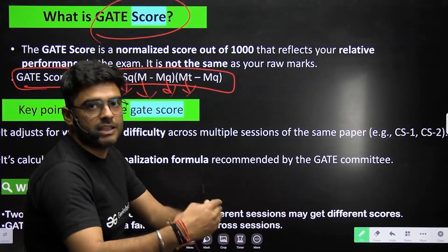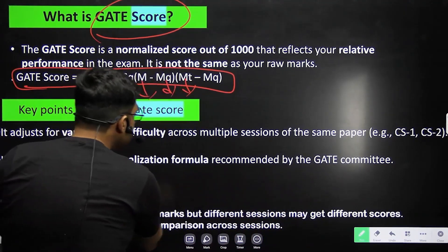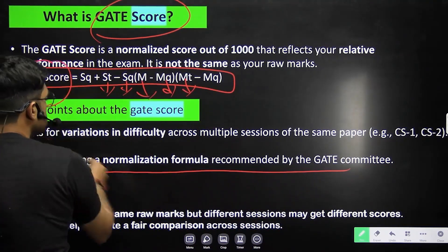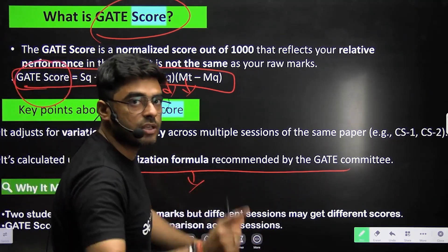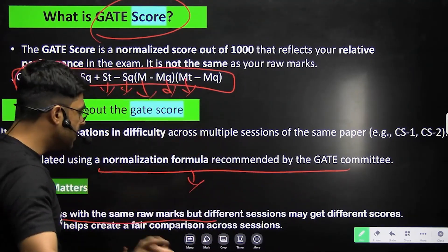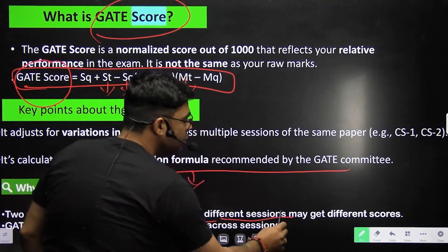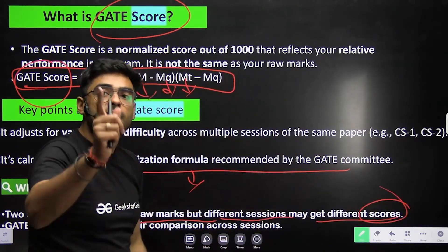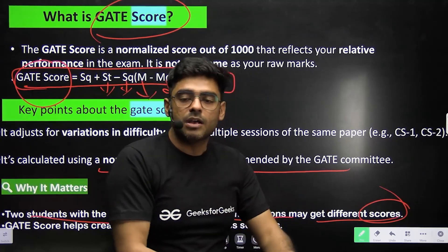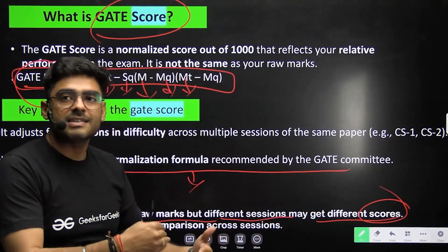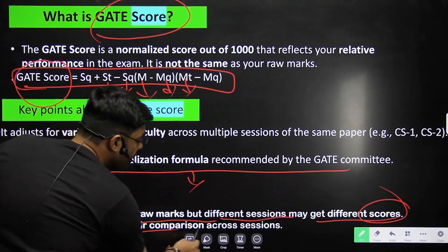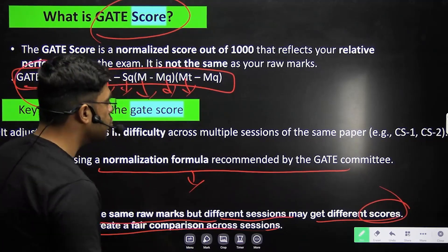For fair evaluation, what GATE does is it normalizes the marks, and based on those normalized marks it gives you the score. Your marks are normalized first, and after normalization your GATE score is released. Two students with the same raw marks appearing in different sessions may get different scores. GATE score helps create a fair comparison across different sessions — that is why GATE scores are calculated.